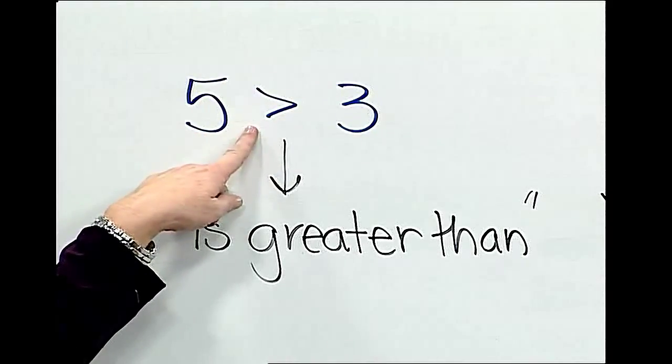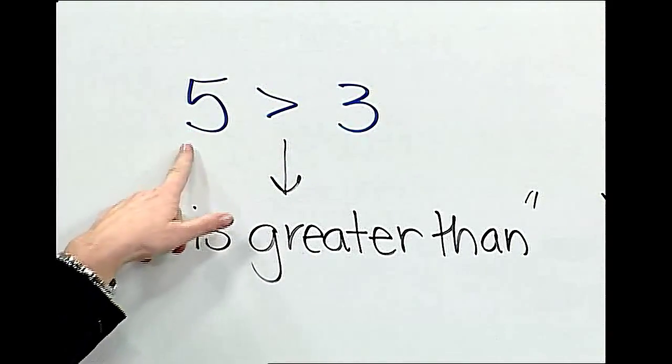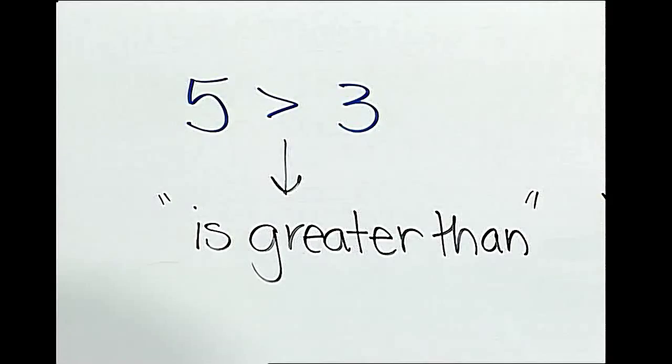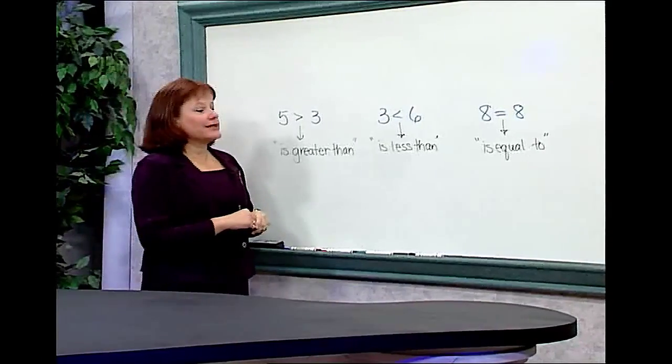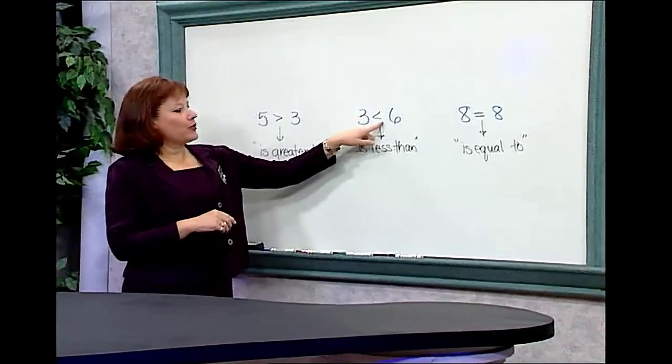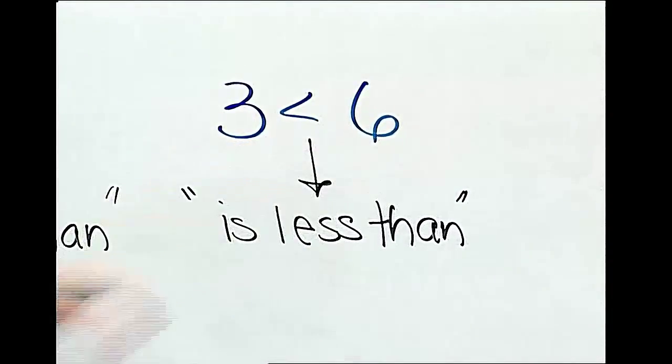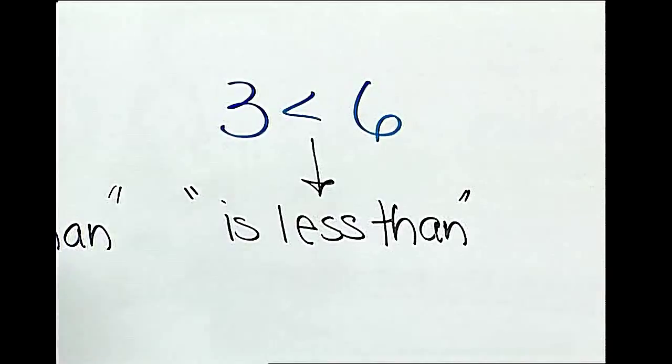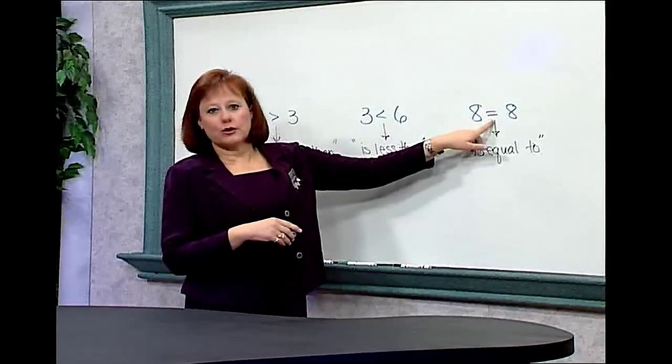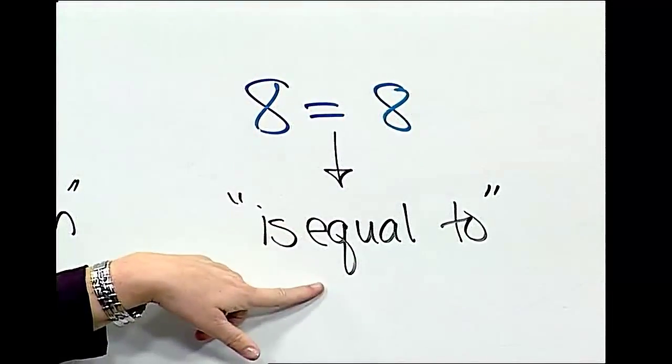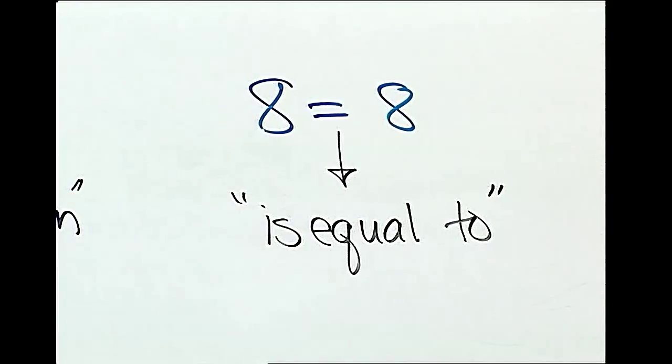The arrow that points to the right means greater than. So this reads 5 is greater than 3. Perhaps you would use the is less than symbol. An arrow that points to the left is read is less than, and this says 3 is less than 6. And of course the symbol you're probably most familiar with is equal to. This symbol means is equal to, and we read it 8 is equal to 8.